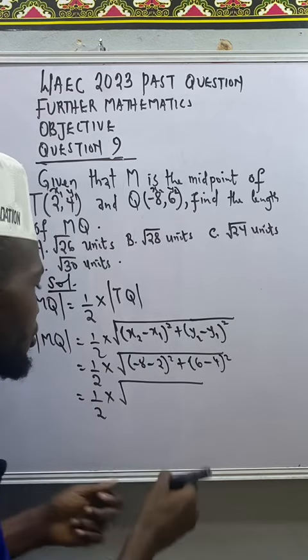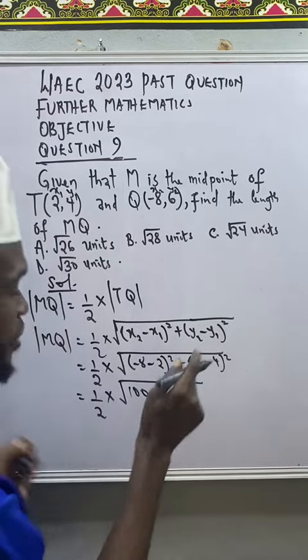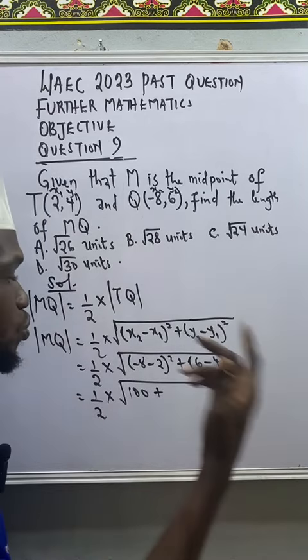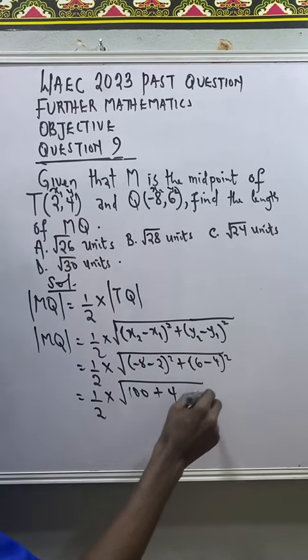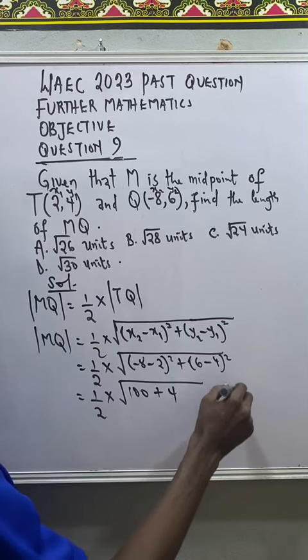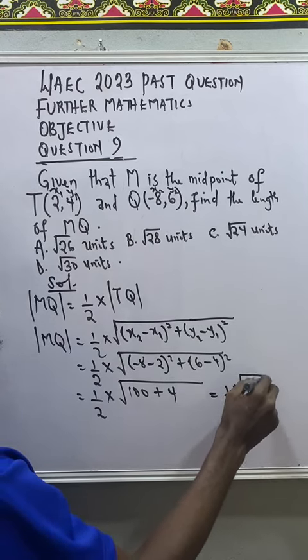-10 raised to the power of 2, that will give me 100. Plus 6 minus 4, that will give me 2. 2 squared will give me 4. So the result of this will be 1 over 2 root 104.